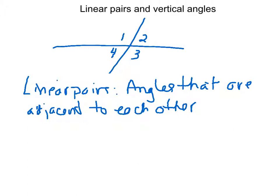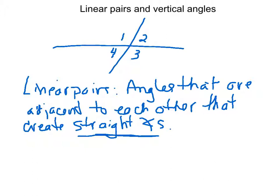Alright, so Linear Pairs are angles that are adjacent to each other that create straight angles. That is kind of loaded. When I use the word straight angles, that should send a little flare off in your brain. What do I know about straight angles? Straight angles are angles that are 180 degrees. So it's telling you that two angles that are next to each other that create 180 degrees are linear pairs.